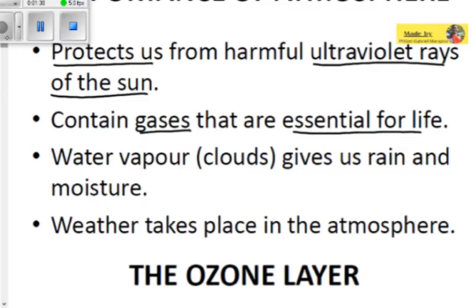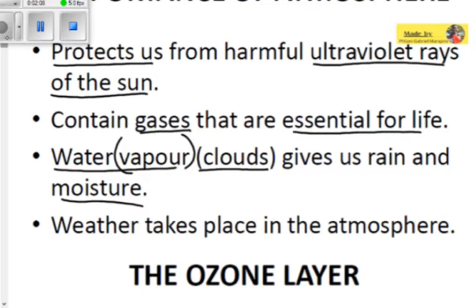Water vapor in the form of clouds gives us rain and moisture. Remember in our previous video we talked about the liquid part of the atmosphere which involves clouds carrying water. Water vapor is the form in which water is carried in clouds — it's not the same as liquid water. Water vapor gives us rain and moisture, and weather takes place in the atmosphere. The basic control of weather takes place in the atmosphere.